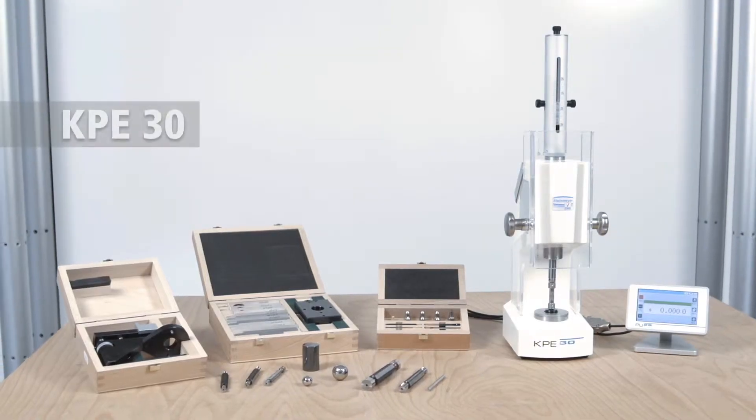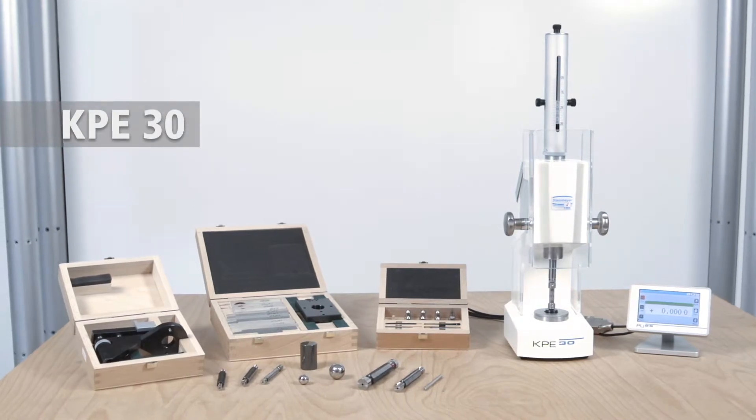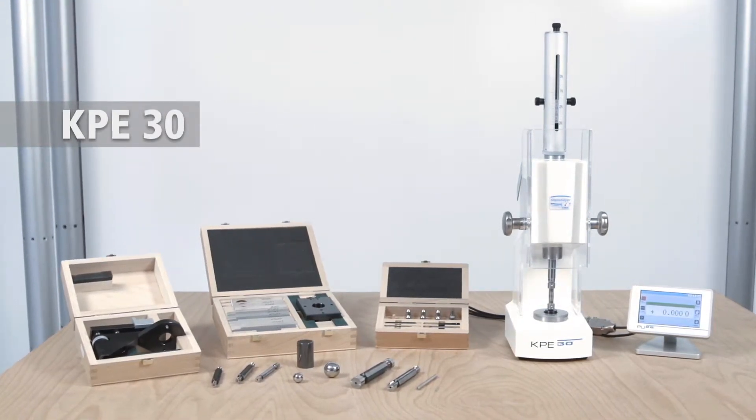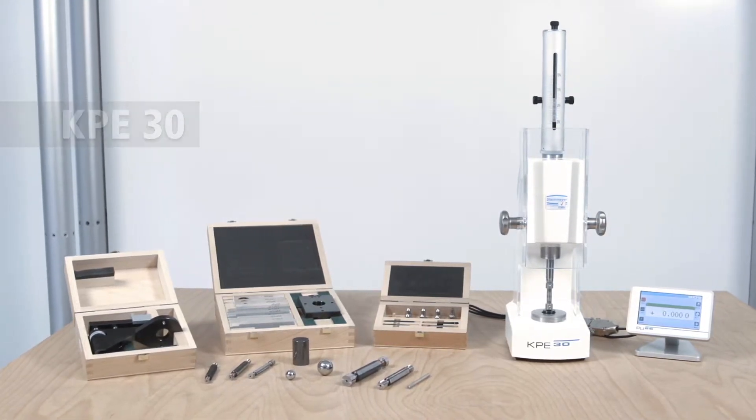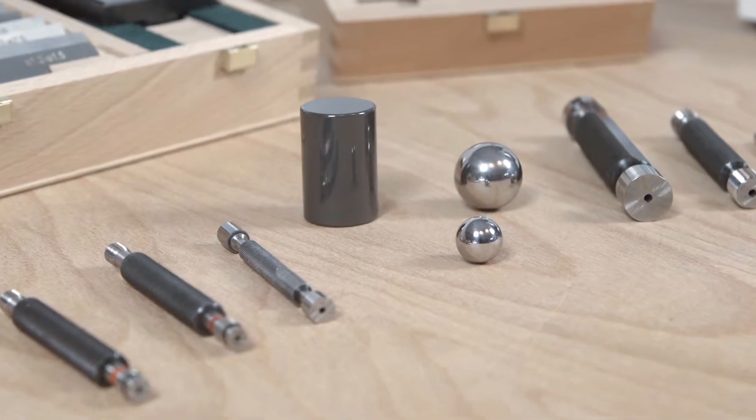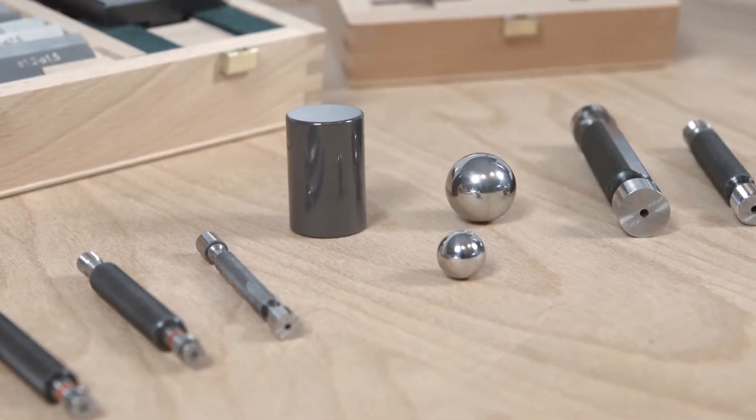Every gauge is exposed to wear and aging and therefore has to be checked on a regular basis. The KPE30 from FeinMess Suhl embodies a simple solution to test plug gauges of every shape and kind up to a size of 30 mm.